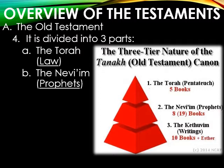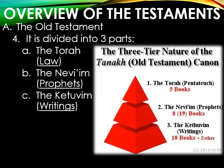Then you have the Nevi'im, which is the Hebrew word for the prophets, and finally the Ketuvim, which is the writings. The Hebrew Bible is not laid out the same way as our traditional English Bibles. For example, Joshua, Judges, 1st and 2nd Samuel, and 1st and 2nd Kings are listed under the prophets in the Hebrew Bible, whereas in ours we put them in the writing section. It is their book and they probably have it laid out in a more logical way than we do.